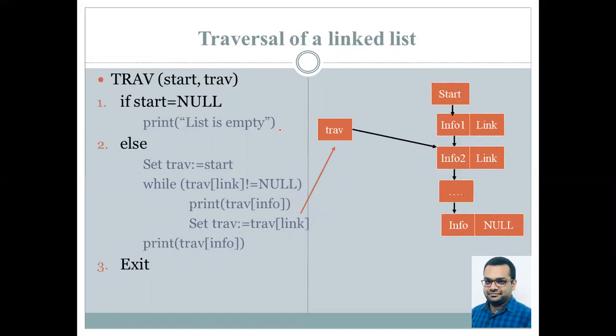We keep on progressing further and printing out the values till the time we reach the last node. In this case, traversal's link not equal to null - this check will be false.